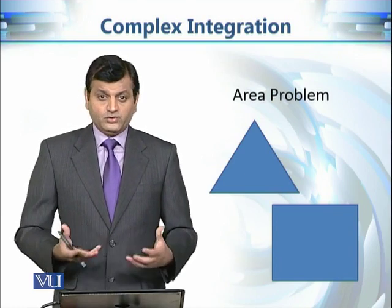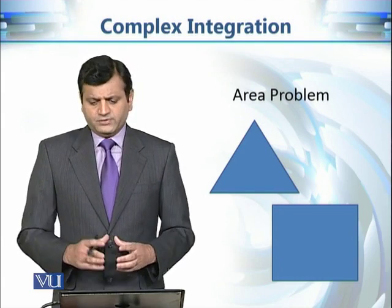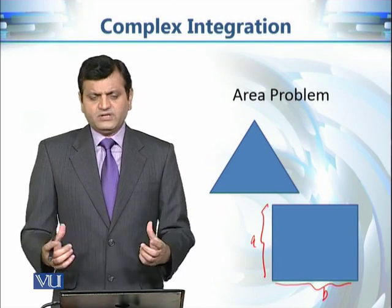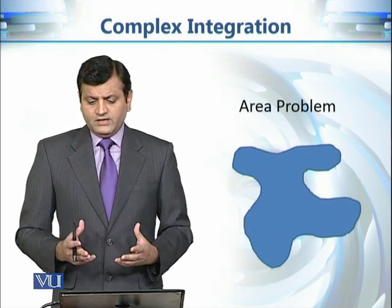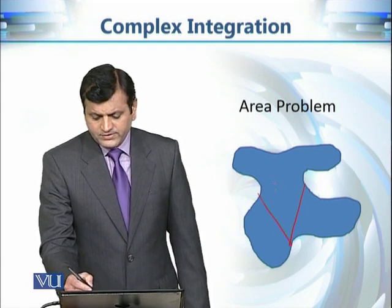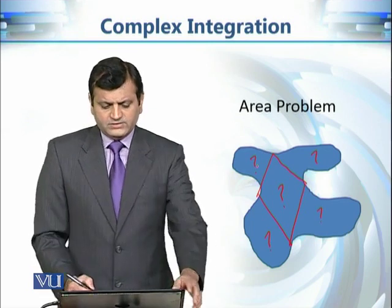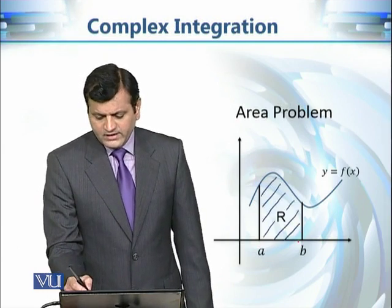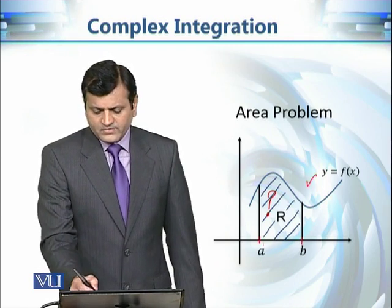Let's discuss the area problem starting from simple regions. What is the area of a triangle? Half base into altitude. What is the area of a rectangle? Width into height. But for a randomly shaped region in the plane, it is a clever idea to divide it into different subregions. These regions appear as the area under the graph of a function y = f(x) and above the interval [a, b] on the real axis. We want to find the area under the graph of this curve, above the x-axis, between the numbers a and b.